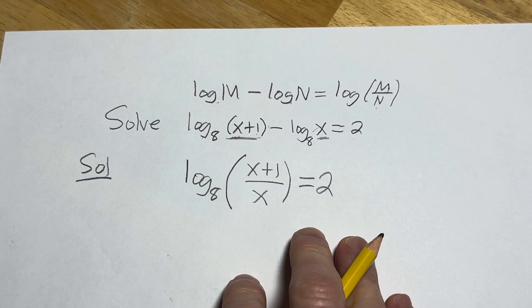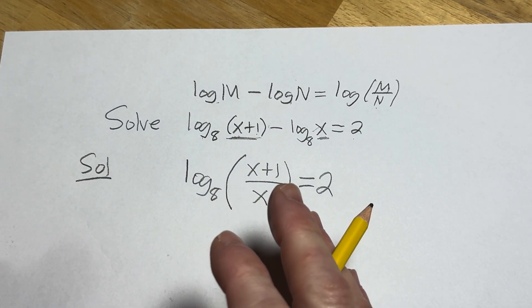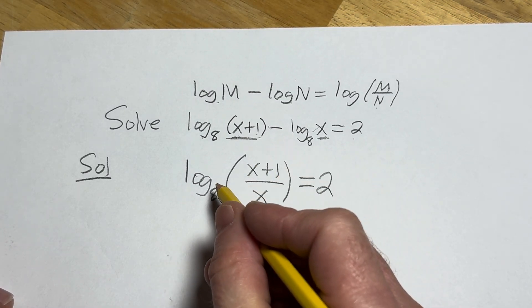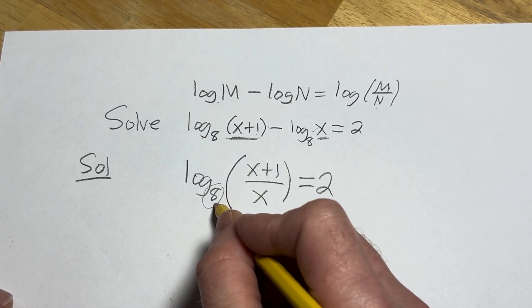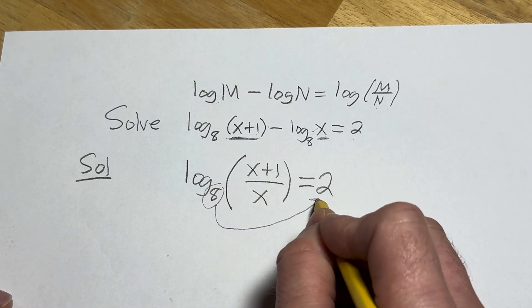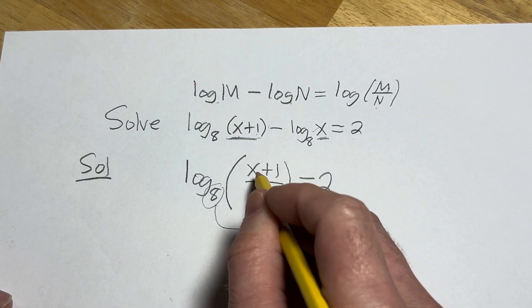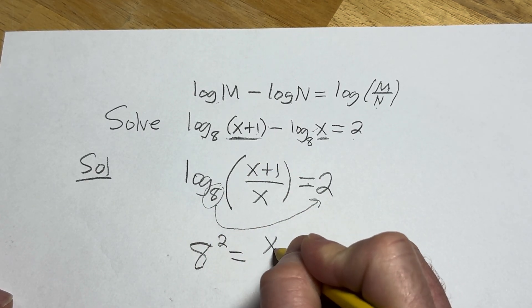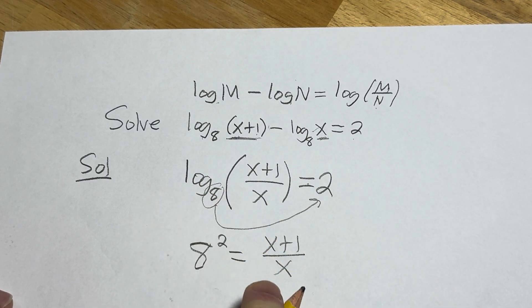This is a logarithmic equation. So this is said to be in logarithmic form. We want this in what's called exponential form. So what we can do is we can write it as follows. 8 to the second power is equal to all of this stuff. So 8 squared is equal to x plus 1 over x. And let's keep going here.